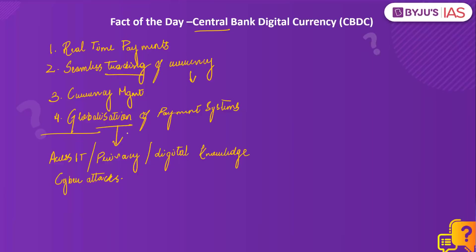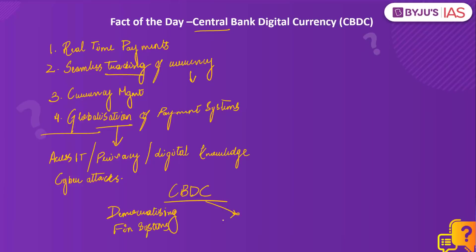RBI will first conduct a feasibility study on the development of a government-backed digital currency, that is, the central bank digital currency. The major difference between cryptocurrency and CBDC is that while cryptocurrency focuses on democratizing financial systems, CBDC focuses on centralizing the financial systems as it would have to go through banking systems.